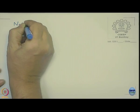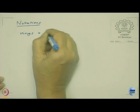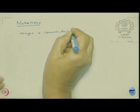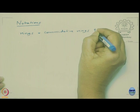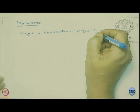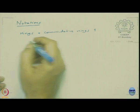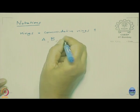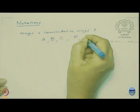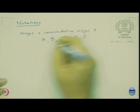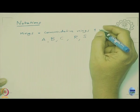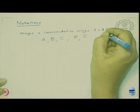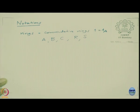All rings in this course are commutative, and I will also assume they have unity, which I will usually write as 1. For notation, I will normally use letters A, B, C and sometimes R, S for rings. Usually I will use the letter A for the ring, and 1 is written as 1_A. When there is a chance of confusion, I will specify.